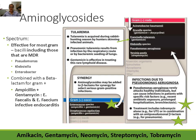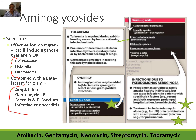Aminoglycosides are active against a very wide range of resistant organisms, effective for most gram-negative bacilli including multi-drug-resistant strains, as well as Pseudomonas, Klebsiella, and Enterobacter. They can be combined synergistically with a beta-lactam like ampicillin for coverage against various Enterococcus species. For example, ampicillin plus gentamicin is used for infective endocarditis caused by Enterococcus.